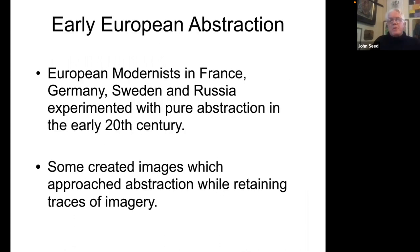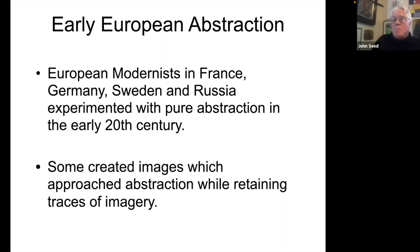I'm going to give some deep context by saying that the timeline for abstraction in Western art recently changed — a few years ago. But before I get to that, in Europe, modernists in various nations — France, Germany, Sweden, and Russia — experimented with pure abstraction or non-objective painting very early in the 20th century.